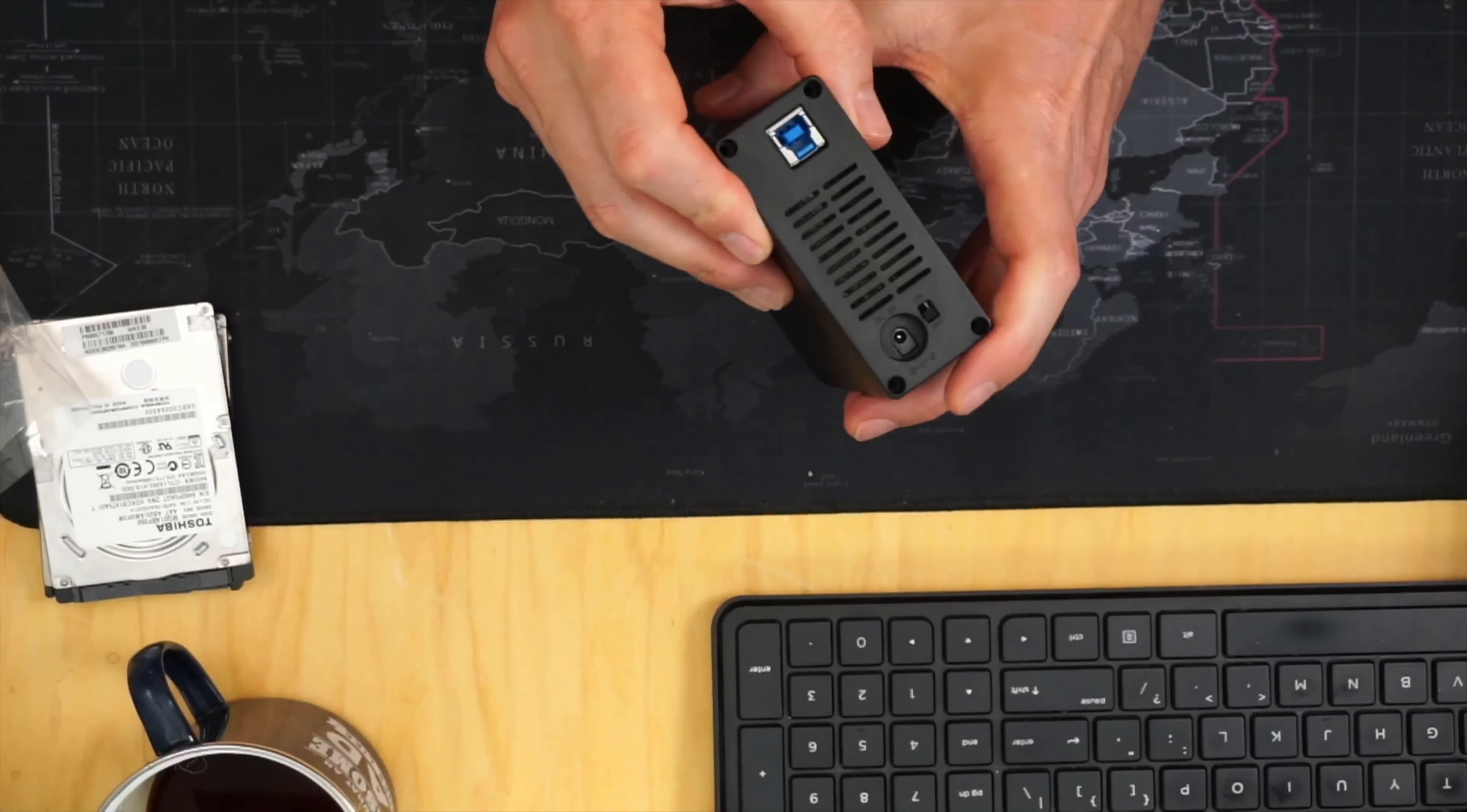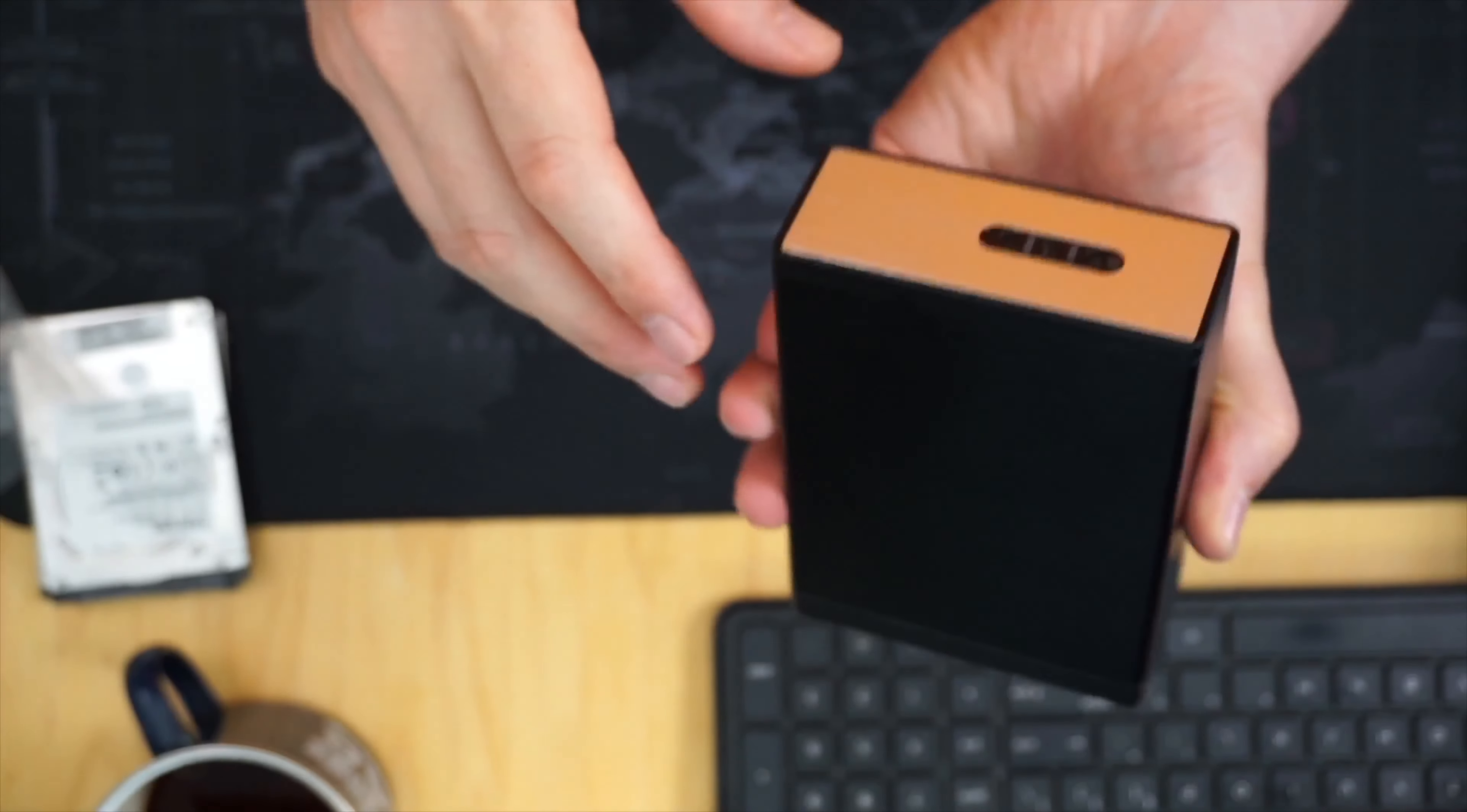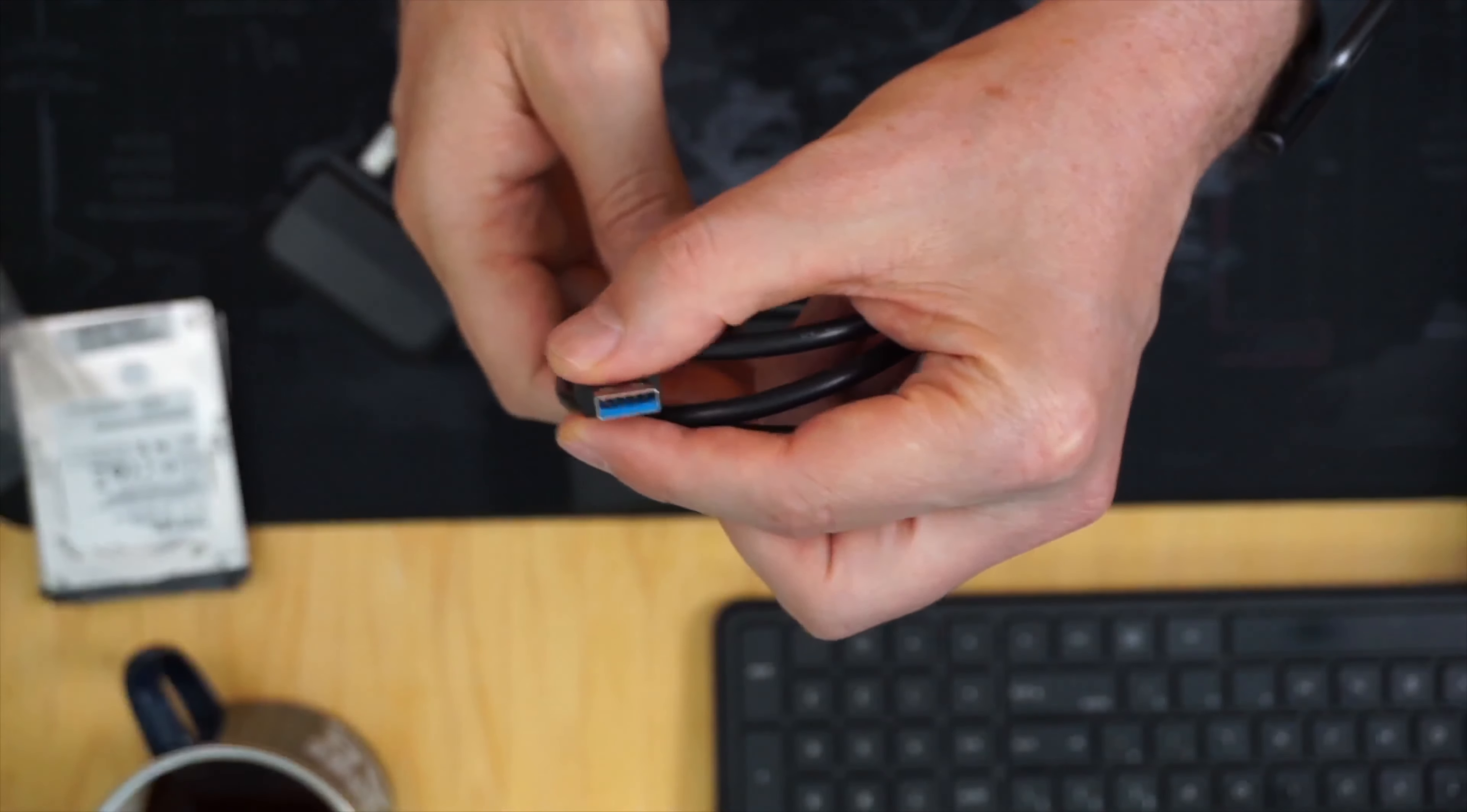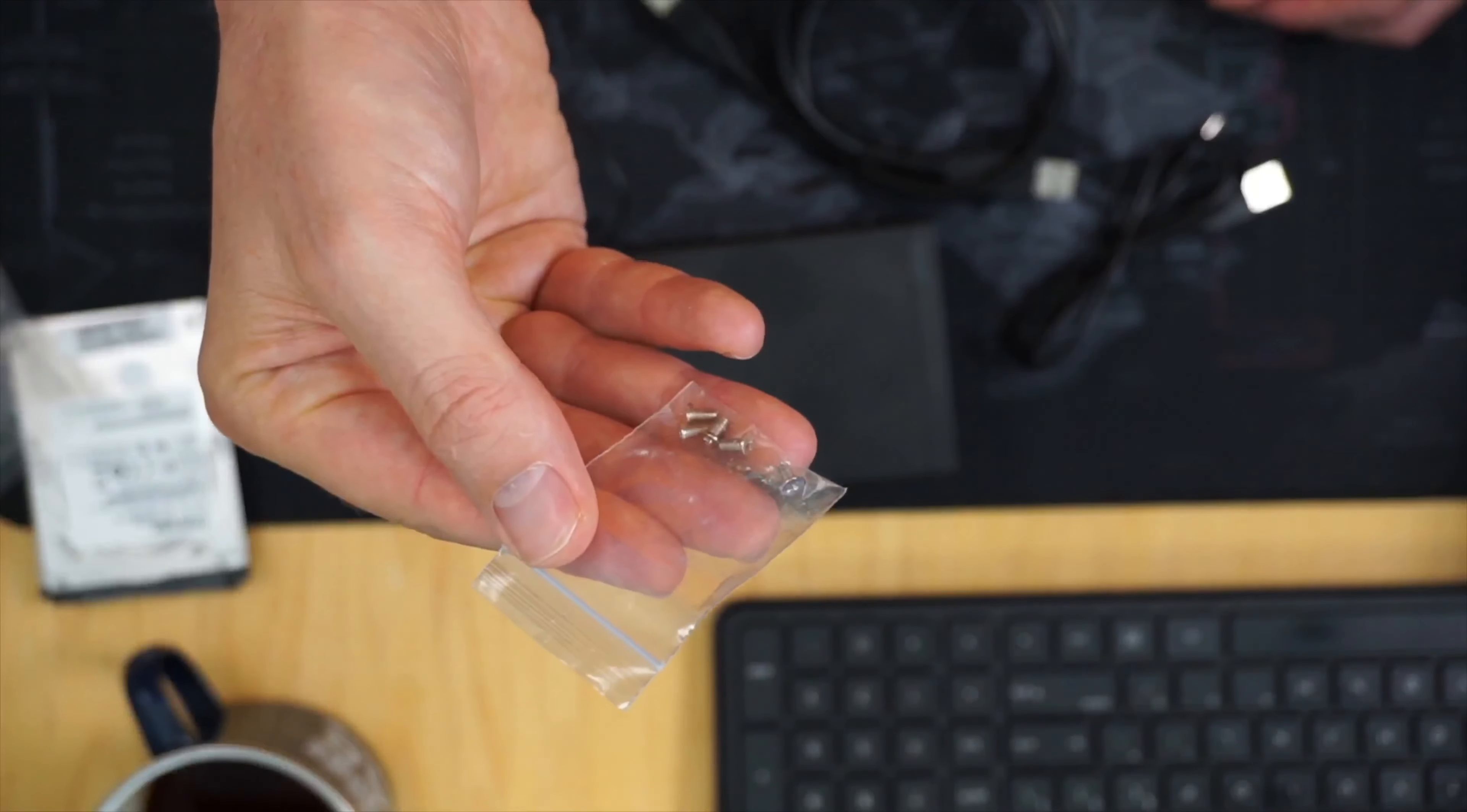We have the enclosure. On the back here we have a power port, on-off switch, and then a USB transfer. On the front we have three lights: power, hard drive one, hard drive two. Then we have a power supply, a USB cable that attaches to our computer, and then a second power supply if we want to use USB to power it. Finally, there's some little screws where I'm going to guess we're going to attach to our hard disk.